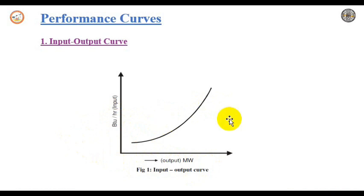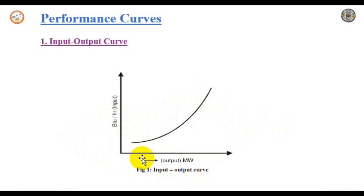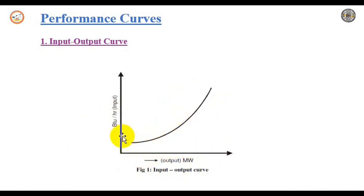With this graph we can say that if the input increases, the output also increases nearly linearly. That is, if the input increases, the output also increases. This is the input-output curve.